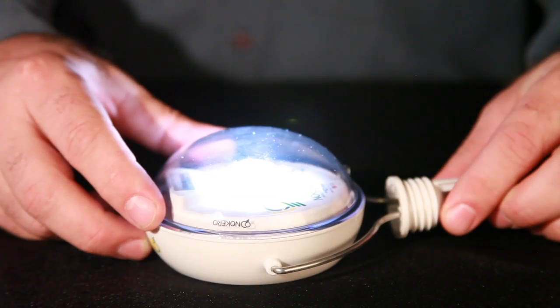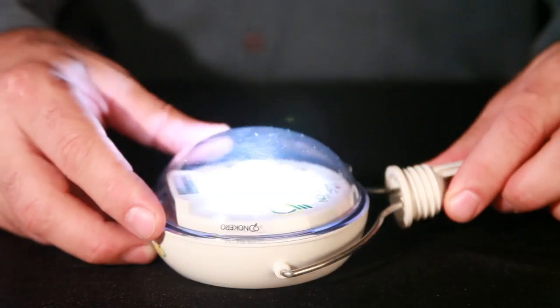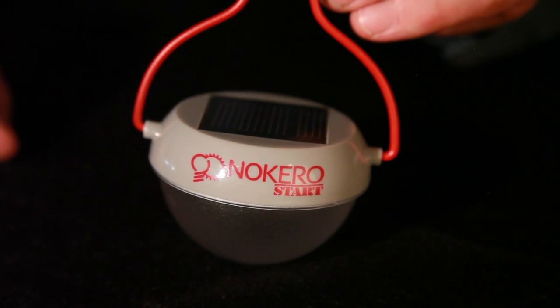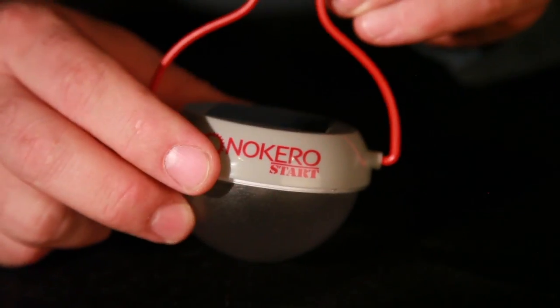The N222 is the newest product in our suite of solar lighting products. On the opposite end of the spectrum of our suite is the N180 start, which is the world's most affordable solar light bulb.